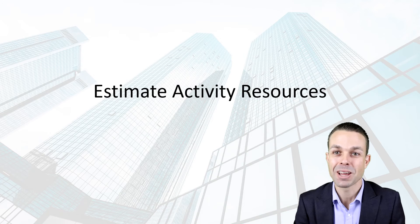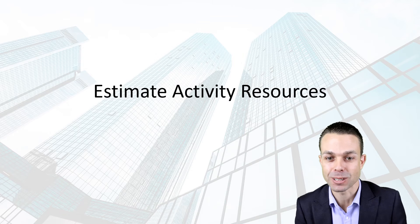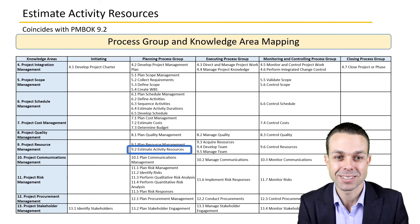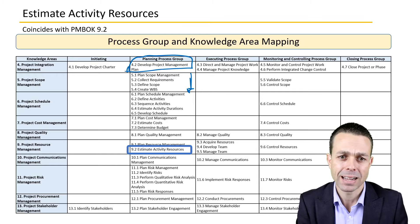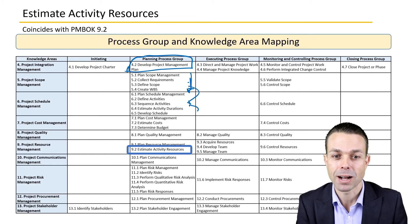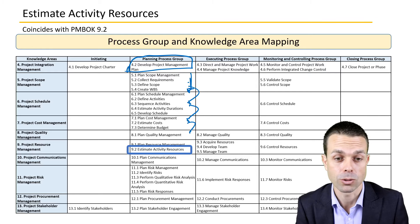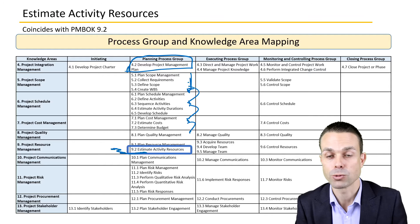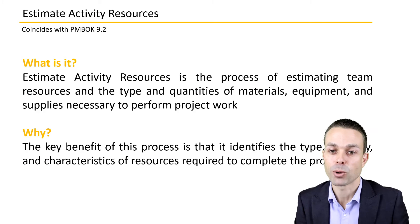Welcome back. We're delving into estimating activity resources. This falls within the planning process group, where we're building out our project management plan. We've covered scope, schedule, cost, and quality, and now we're looking at who and what is required to do the work. Estimate activity resources is the process of estimating team resources and the type and quantities of materials, equipment, and supplies necessary to perform project work.